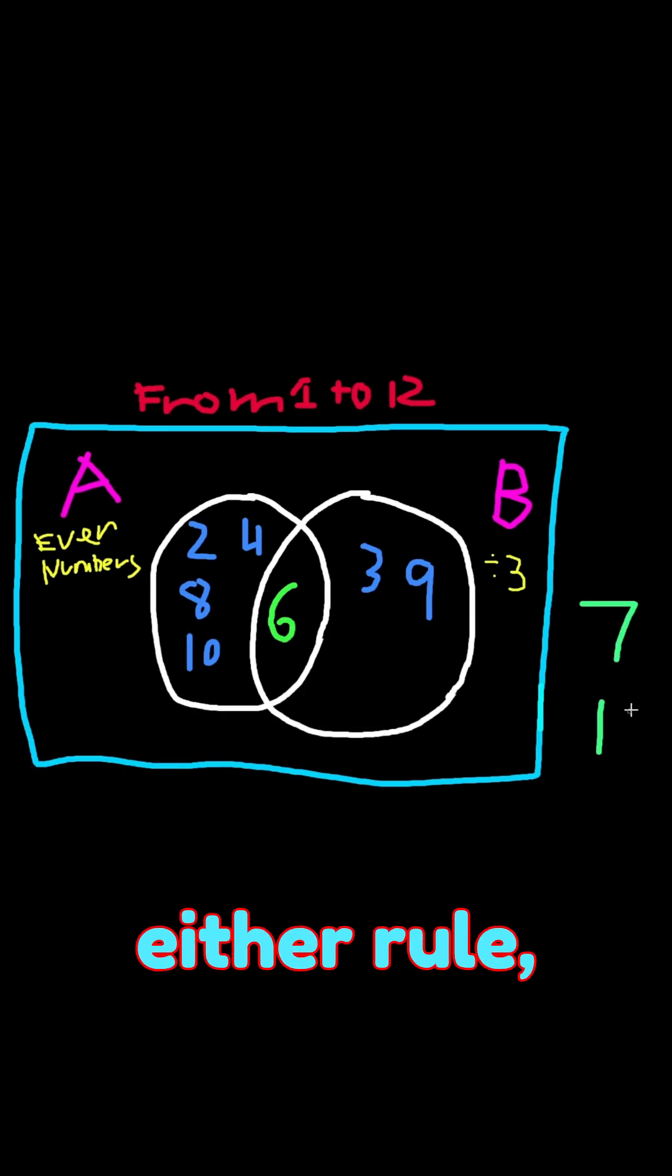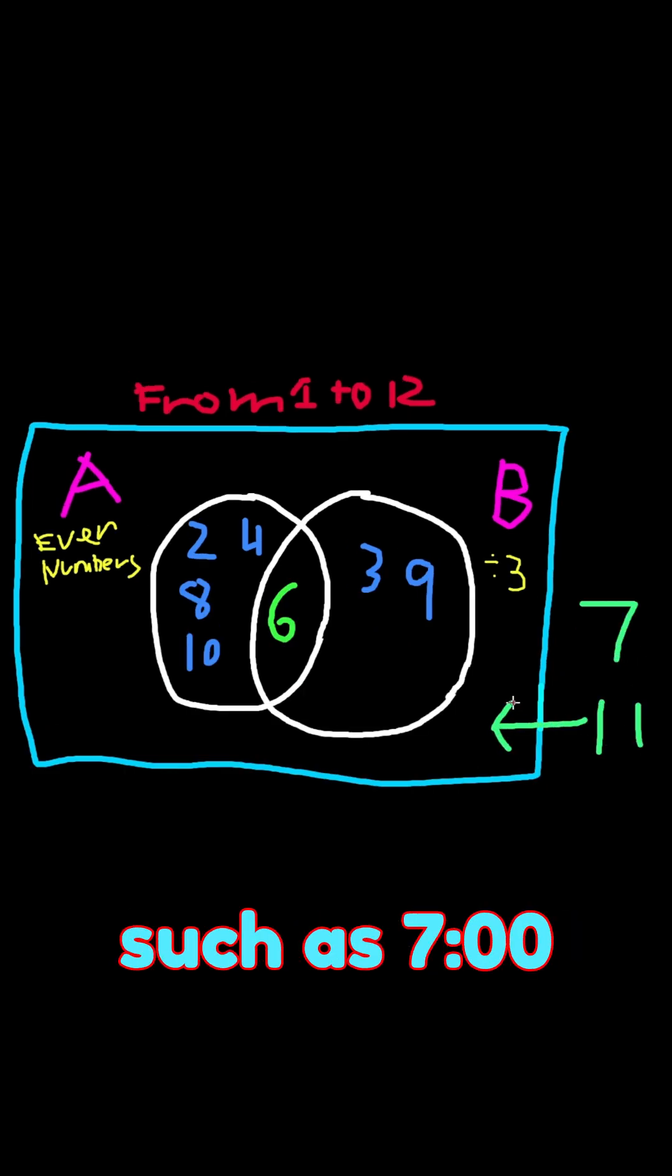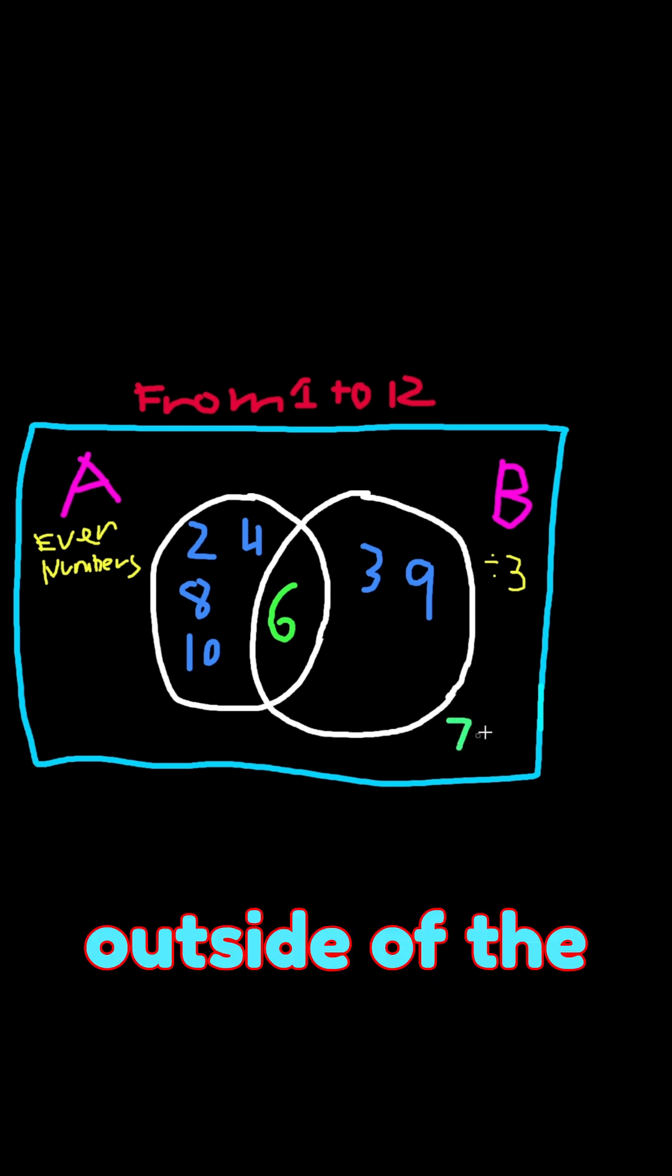Numbers that don't fit in either rule, like prime numbers such as 7 and 11, will go outside the circles.